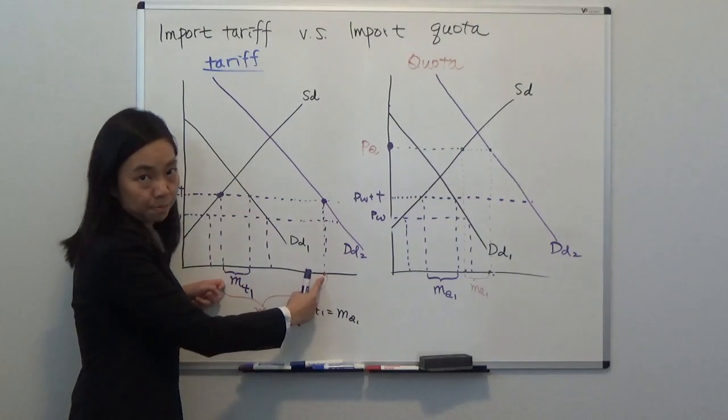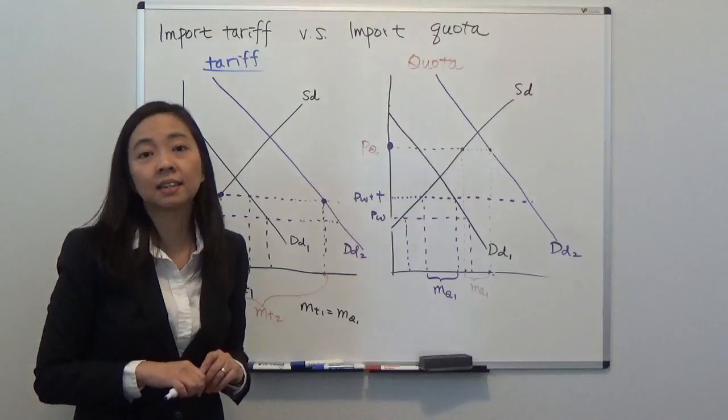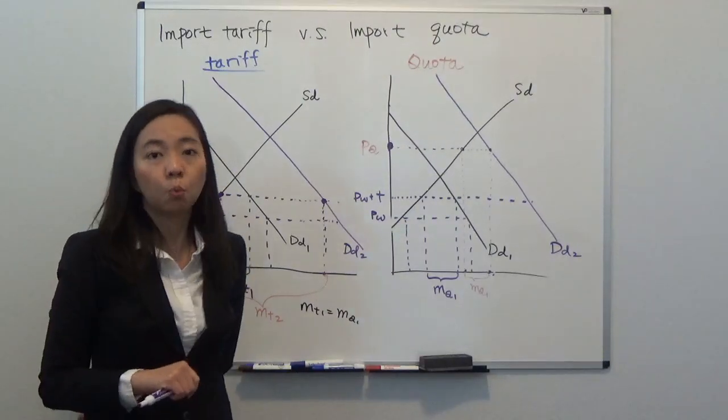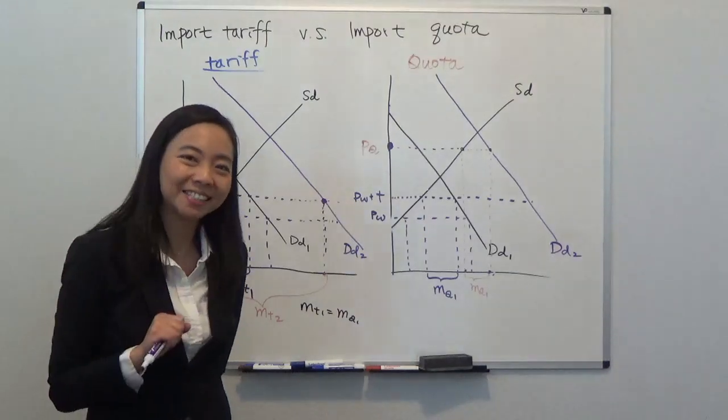Whereas with tariff, your price remains the same at PW+T even with increased demand and you import a lot more than before. So you can see why import quota is a lot more restrictive than import tariff when there's an increase in demand. I hope this helps and I'll see you next time.